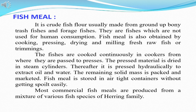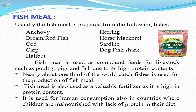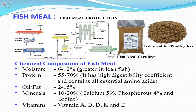Besides fish eating, fishes are also used for preparing fish flour, which is used by various poultry as food. This fish meal is normally prepared by cooking, pressing, drying and milling fresh raw fish or sometimes its trimmings. Nearly about one third of the world's fish catch is used for the production of fish meal. The fishes from which fish meal is obtained are mainly cod, carp, halibut, sardines etc. Its chemical composition includes minerals at 10–20% and also vitamins A, B, D, K and E.